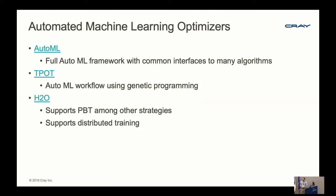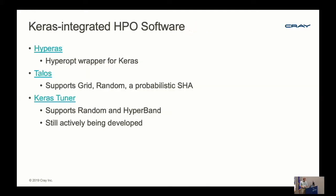There are also some Keras-integrated HPO softwares. HyperOS is a Hyperopt wrapper for Keras. Talos has grid, random, and probabilistic successive halving. And lastly, Keras Tuner, which Josh mentioned—of these three, this is the one receiving the most active development right now. Currently it supports random and Hyperband. Looks like an exciting project.